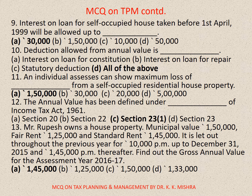Question number 11: An individual assessee can show a maximum loss of — from a self-occupied residential house property. Correct option is A: 1,50,000. Question number 12: The annual value has been defined under the Income Tax Act 1961 under Section 23 Clause 1.